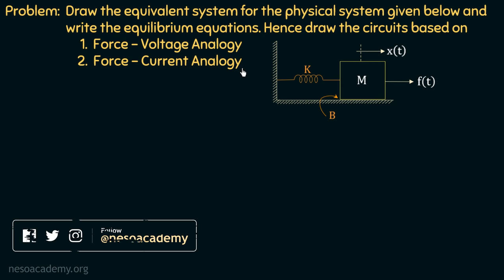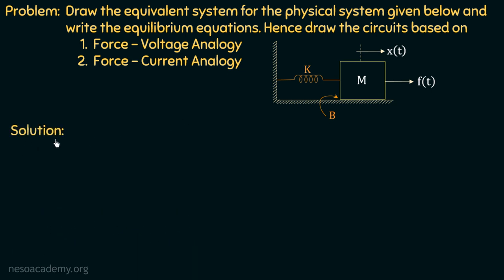In this problem, we are given a physical system. If we observe the system, we can see there is a mass m connected with the spring from one side, and the spring is connected with the fixed support from the other side, with spring constant equal to k. One force F is applied on the mass to the right-hand side, and due to this there is a displacement x to the right-hand side. Moreover, there is friction between mass m and the fixed surface, with coefficient of viscous friction equal to b. We have to draw the equivalent mechanical system and write the equilibrium equations, then apply force-voltage analogy and force-current analogy to draw the electrical analogous networks.